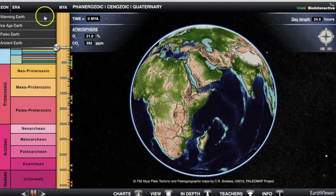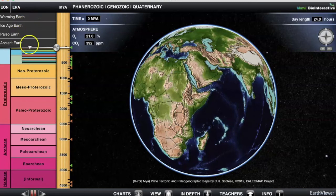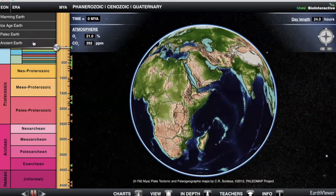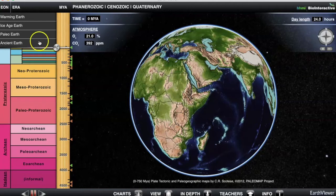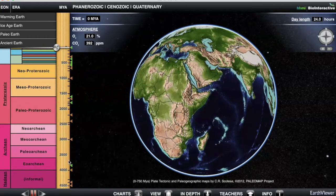Over here on the left-hand side, we have four timelines. We have the warming Earth, which is the shortest timeline. We have ice age Earth, paleo Earth, and the ancient Earth. That's where we are right now and that's the longest timeline. The best estimates we have is that our Earth is almost 4.6 billion years old. That's an incredibly long period of time. But how do we know that? The two main ways that we know how old our Earth is is the study of rocks and the study of fossils.